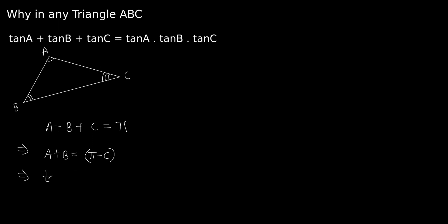We have tan(A + B) = tan(π - C). Now we can use the formula for tan(A + B). The formula is tan(A + B) = (tan A + tan B) / (1 - tan A · tan B).